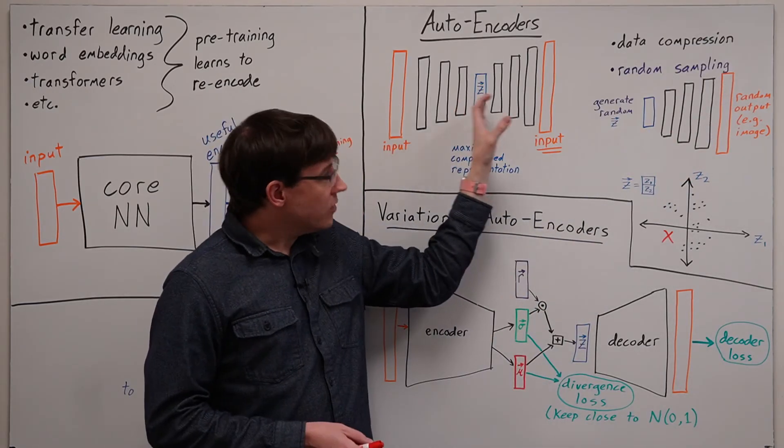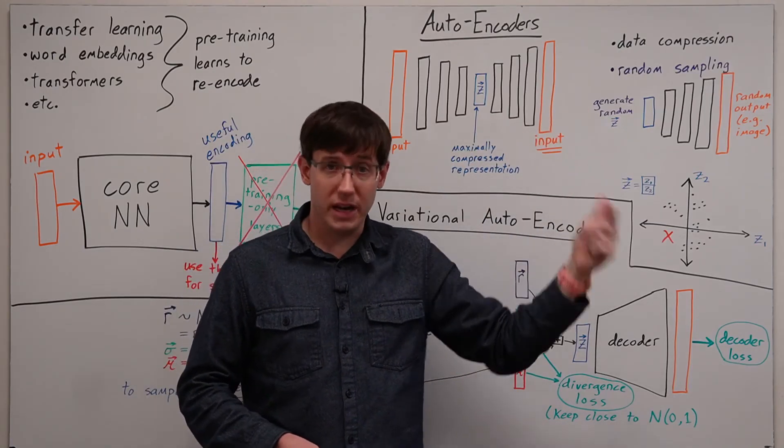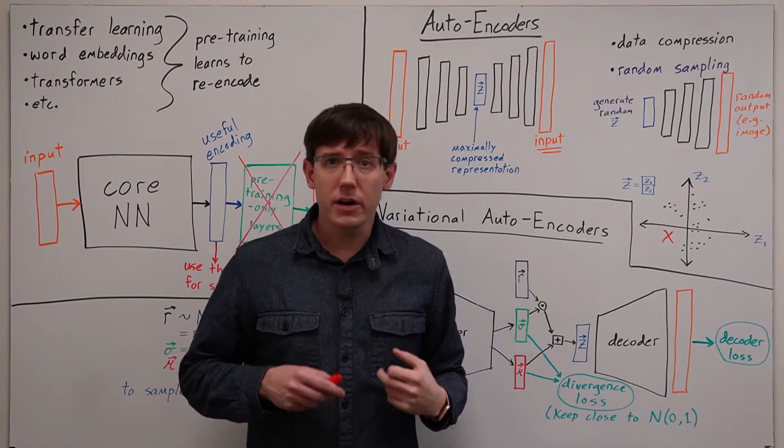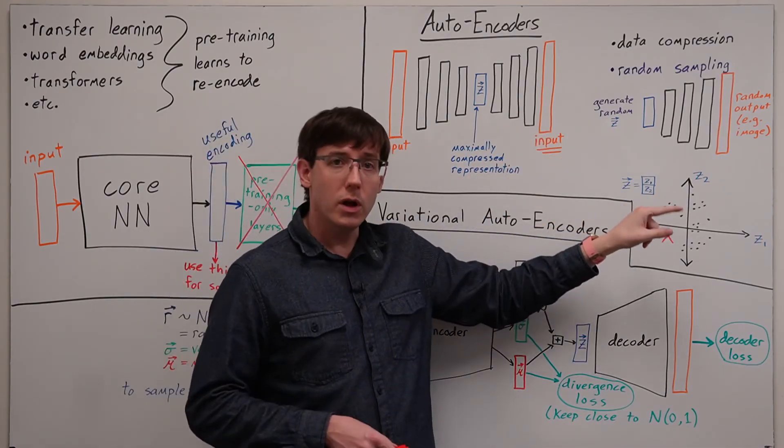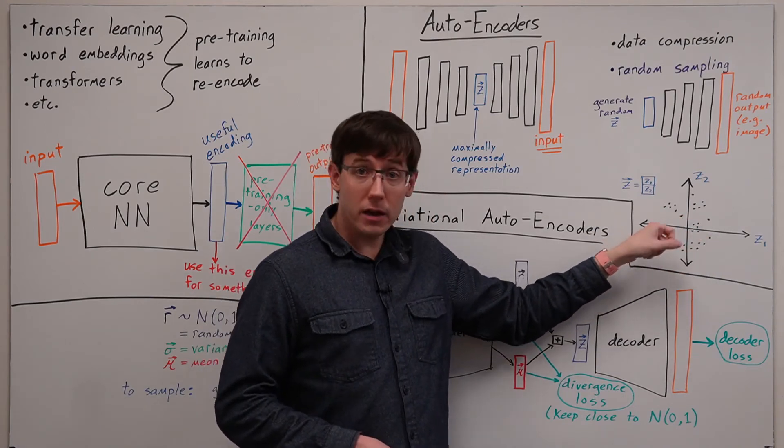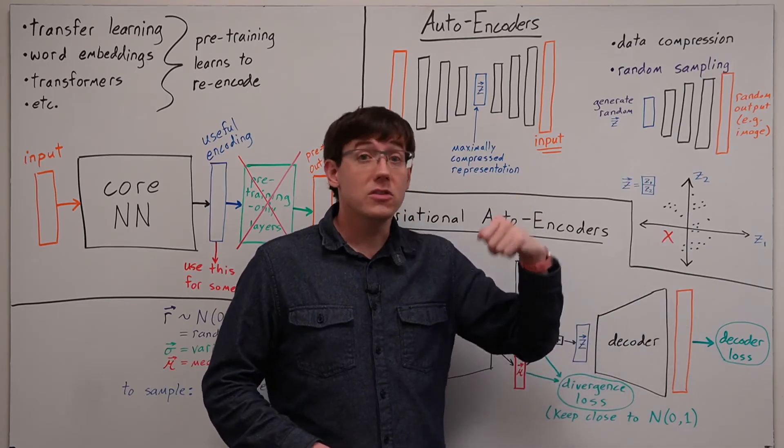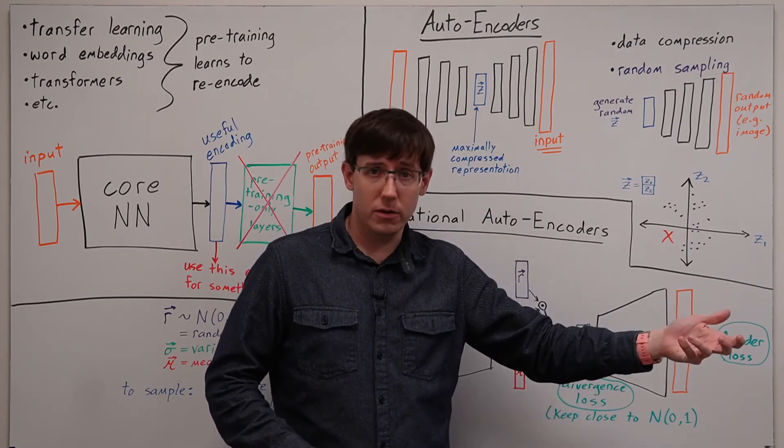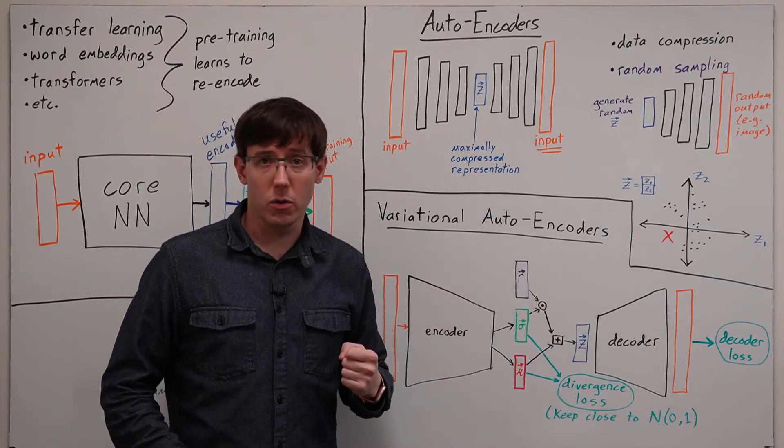So if we want the decoder that we train to be useful for randomly sampling from a data set, we can change the architecture slightly to encourage the autoencoder to learn representations that look like the sorts of things we would get if we sampled random vectors, and that leads us to the variational autoencoder.